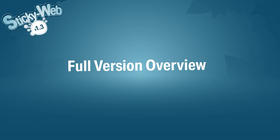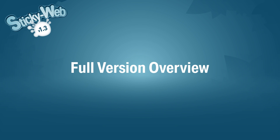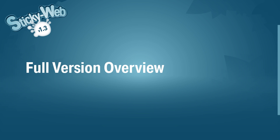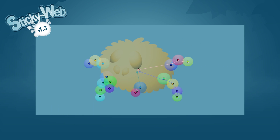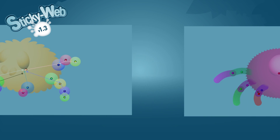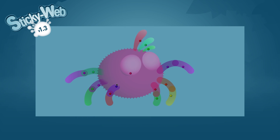Hey everyone, this is a full in-depth overview for StickyWeb. StickyWeb lets you parent directly in the composition just by drawing a mask on top of your layers, and it makes anchoring so much easier. You can adjust multiple anchor points quickly, accurately, and even at the same time.